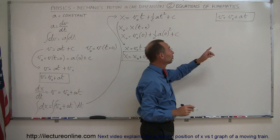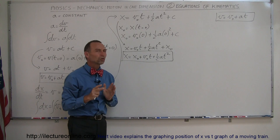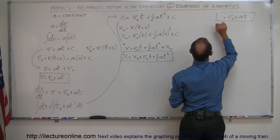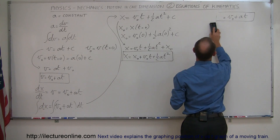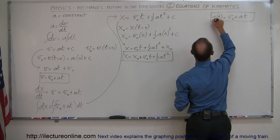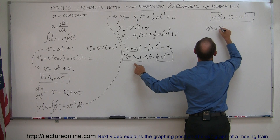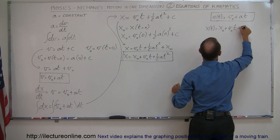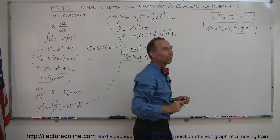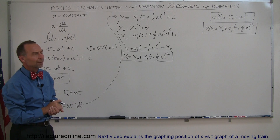We now have an equation to determine the velocity of an object and an equation to determine the position of an object, both as functions of time. Written precisely: v as a function of time equals v-naught plus at, and x as a function of time equals x-naught plus v-naught times t plus one-half at squared. Now, how do we find the third equation of kinematics?